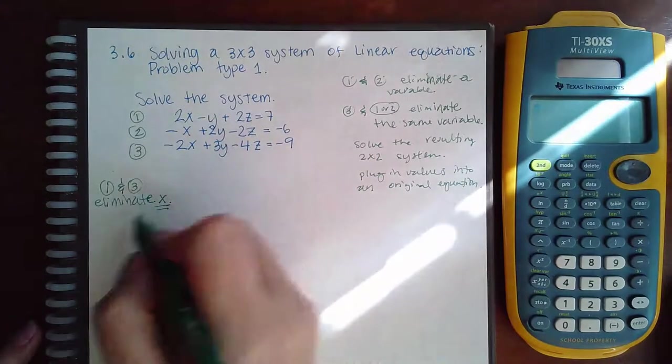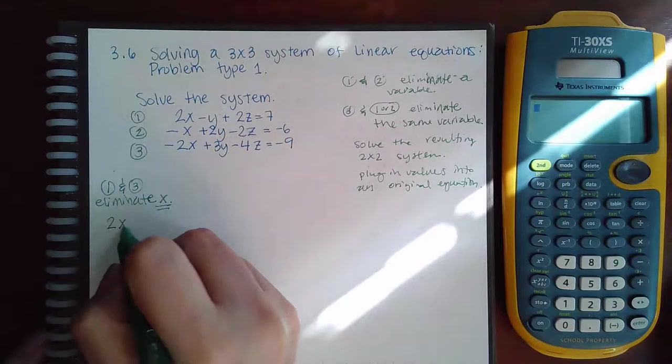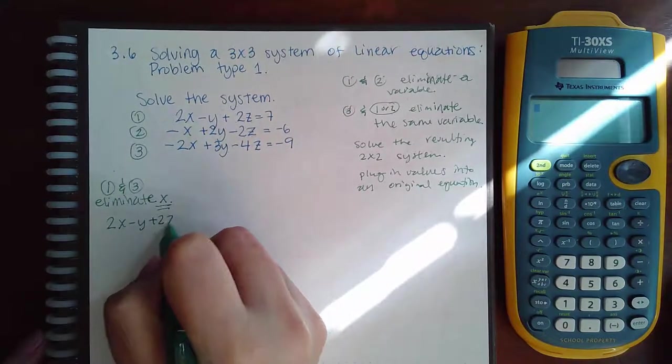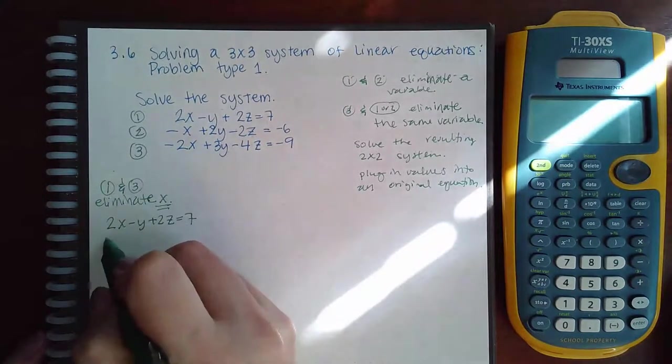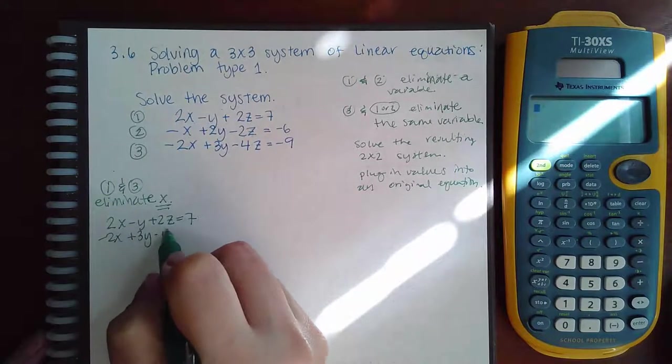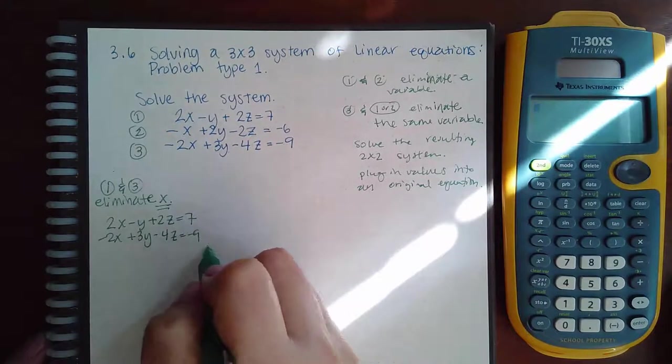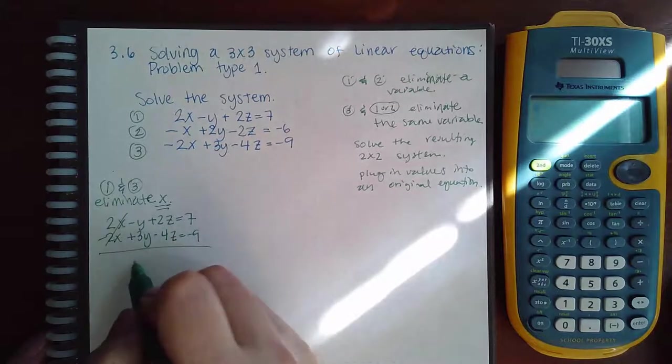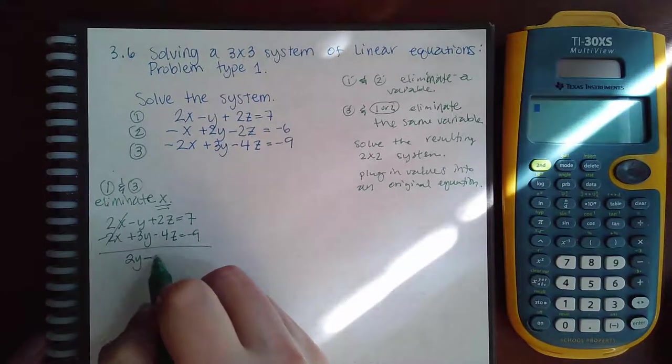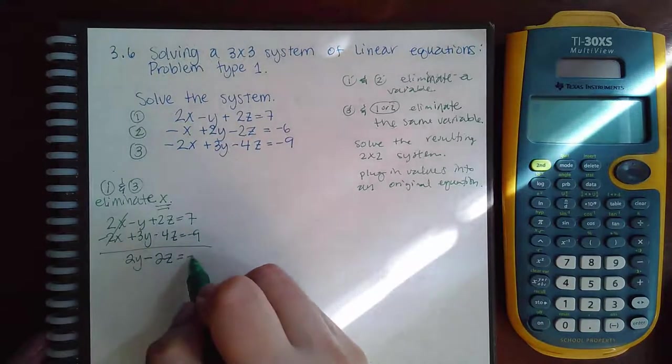So I'm going to take 1 and 3, I'm going to say 2x minus y plus 2z equals 7. And then negative 2x plus 3y minus 4z equals negative 9. So those do eliminate, I get 2y minus 2z equal to negative 2.